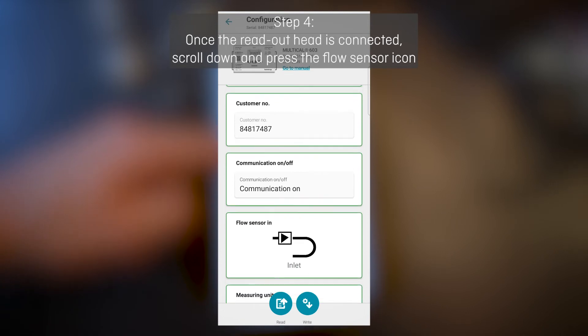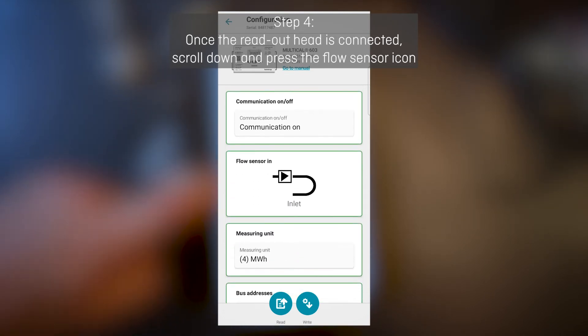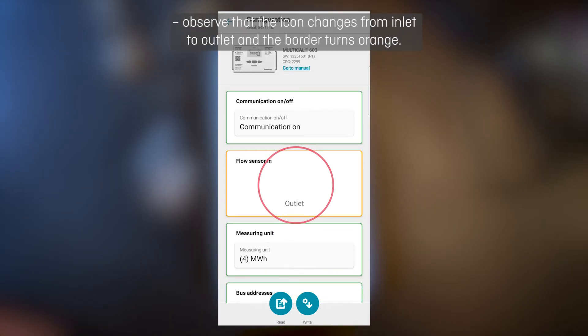Step 4. Once the reader head is connected, scroll down and press the FlowSense icon. Observe that the icon changes from Inlet to Outlet and the border turns orange.